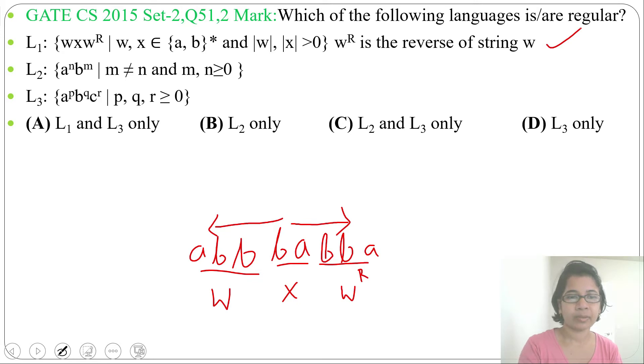Suppose you are starting with B, let W be a string starting with B, let BA, let X equal A, then W reverse will be AB. So this is our W, this is our X, this is our W reverse.